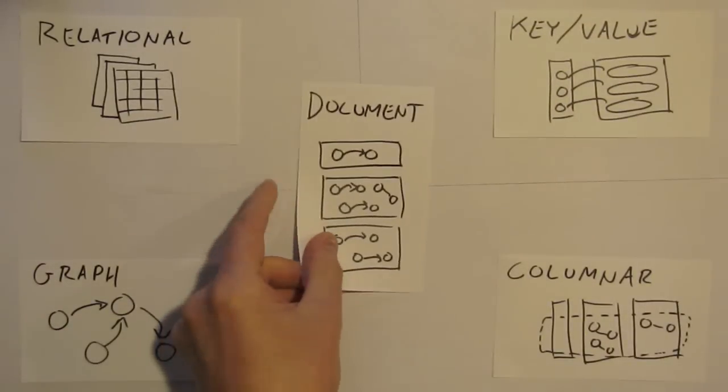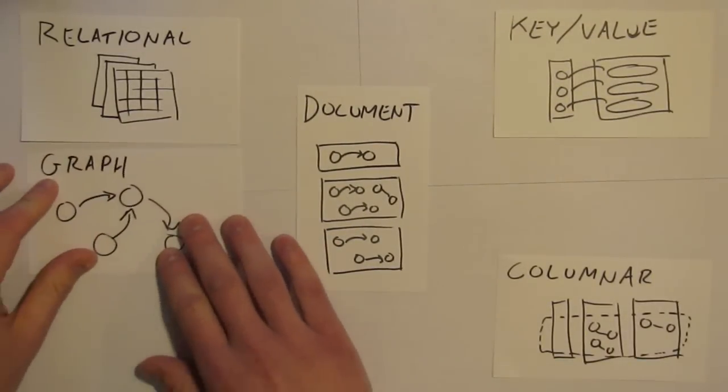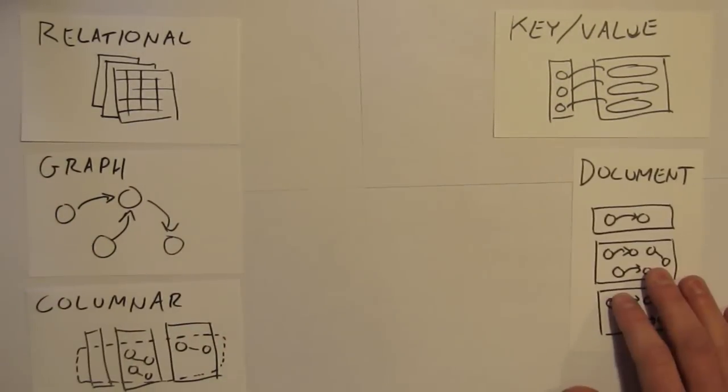Relational, columnar, graph, key-value, document data stores too! So much to discover, in this song we'll cover from each type at least one or two!